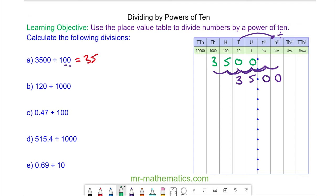For question B, 120. And we're dividing, so we're moving to the right, but this time three places. So the zero units move into the thousandths column. The two tens moves to the hundredths. And the one hundred moves to the tenths. So we have 0.12.